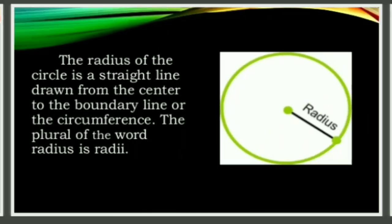Radius: The radius of a circle is a straight line drawn from the center to the boundary line or circumference. The plural of radius is radii.